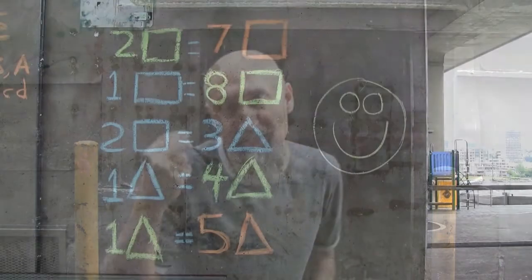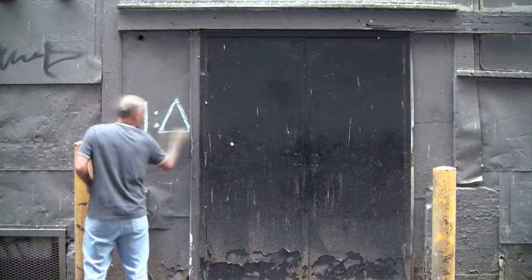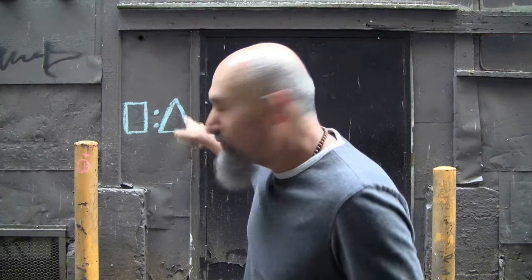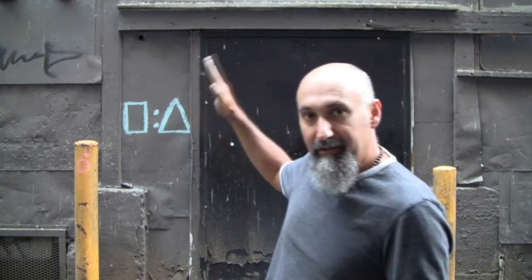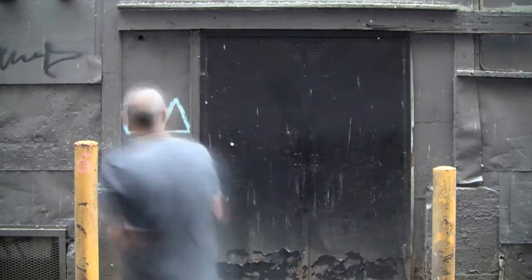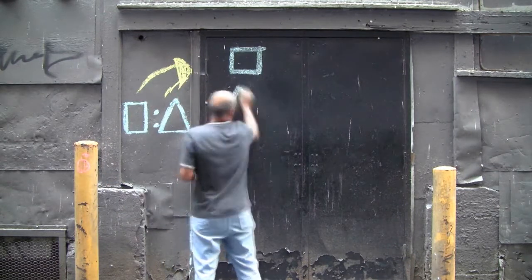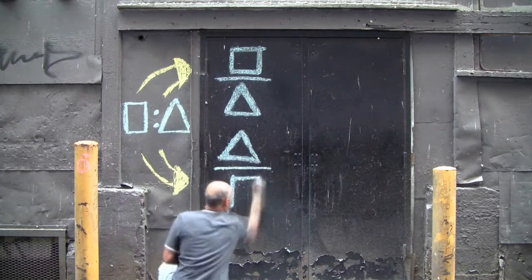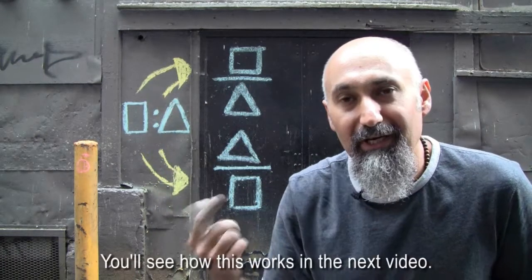The connection we built between these two systems was that two blue squares are equal to three blue triangles — the two dots represent the equal sign. Now, there are two ways to deal with this ratio. You can take the ratio and do a 90-degree turn one way, or a 90-degree turn the other way, creating two different fractions. The equal sign in a ratio is basically the division sign — the fraction sign.